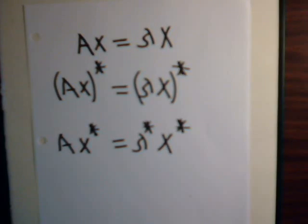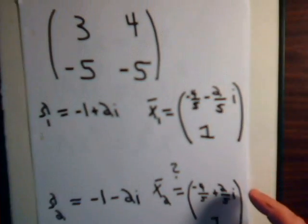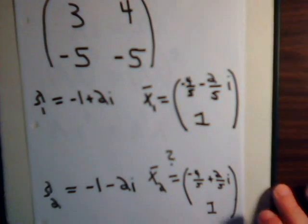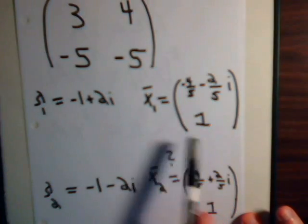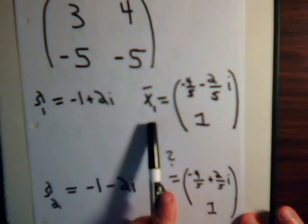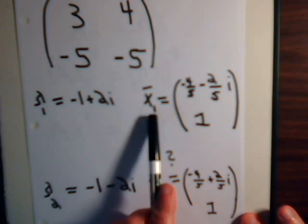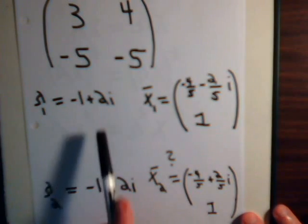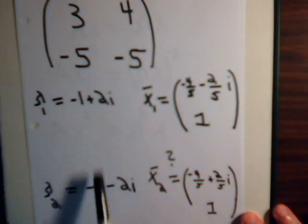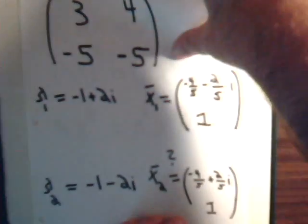So, we certainly suspect that when we determine our second eigenvector, it should just be the complex conjugate of the first eigenvector. That is the eigenvector that belongs to the complex conjugate of its eigenvalue. These are a complex conjugate pair. So, let's see what happens.